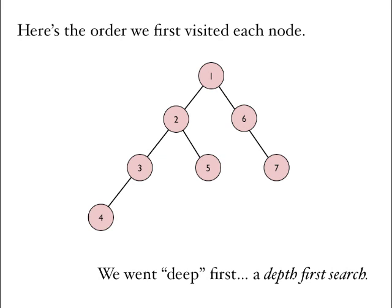Here's an illustration of the order in which we visited the nodes. We started at the root — node 1 — then went down to nodes 2, 3, 4, and then returned back up the tree until we found an unexplored node: node 5. Then back, back, down to 6, down to 7, and out. We went deep first — from node 1 we went 2, 3, 4, as far down the tree as we could to the left before returning. An alternative would have been to go to node 2 then back up and across, but instead we went deep first — this is called a depth first search.